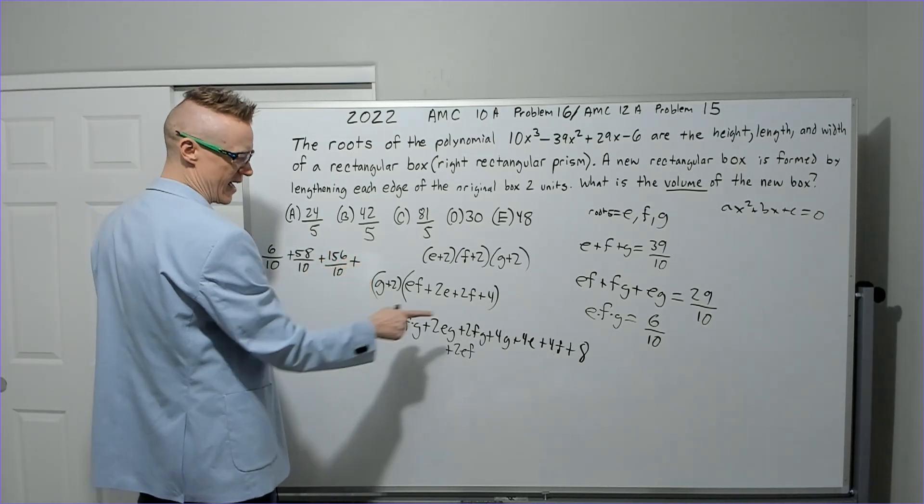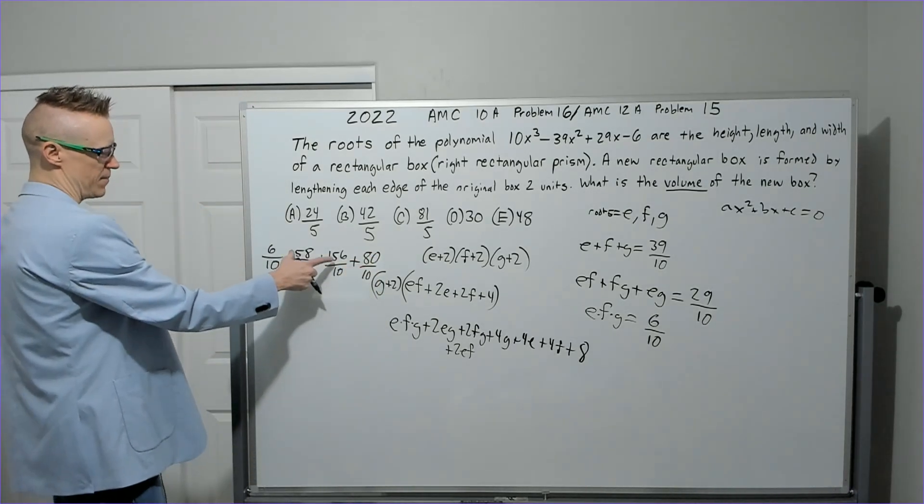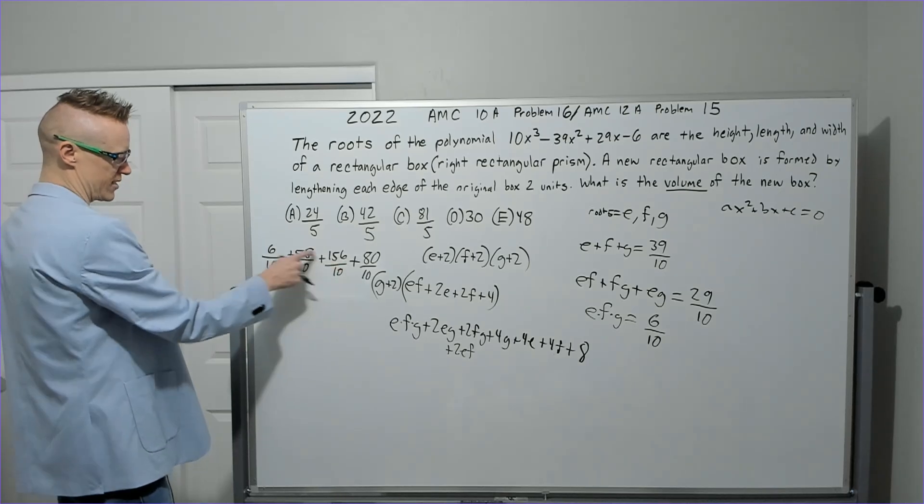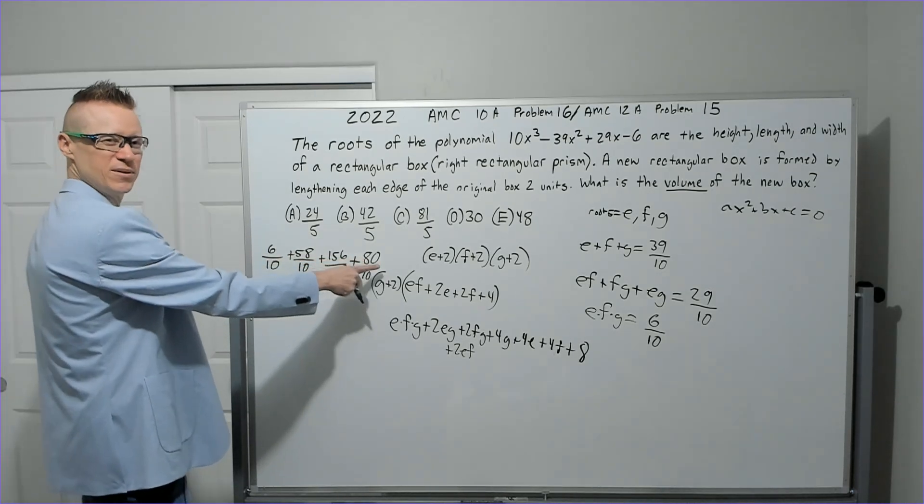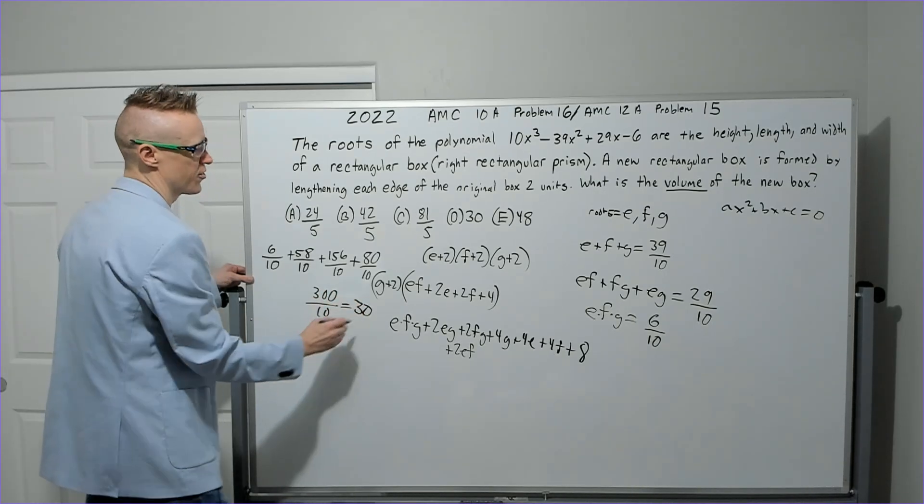Next we're going to add 8, but we're going to write it as 80 over 10. So now we're going to add this all up. There's 214 plus 6 is 220, plus 80 is 300. 300 over 10, answer 30.